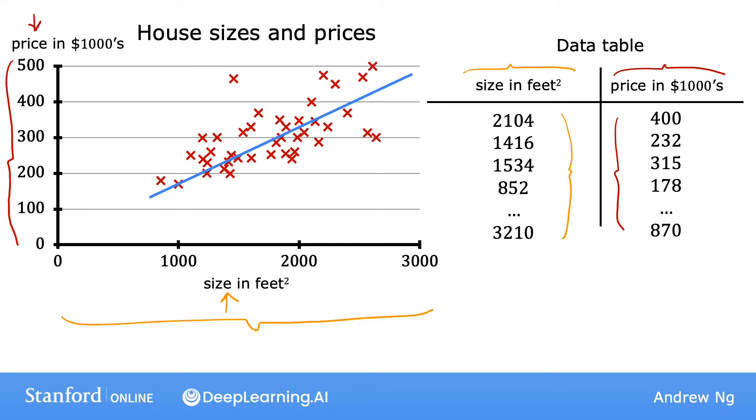For example, the first row of the table is a house with size 2,104 square feet. So that's around here. And this house sold for $400,000, which is around here. So this first row of the table is plotted as this data point over here.